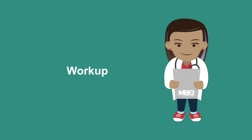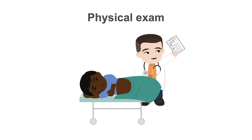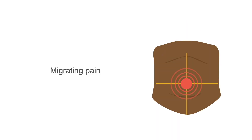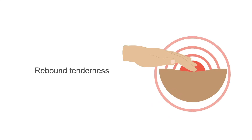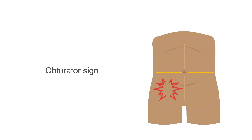Now let's work up acute appendicitis. The physical exam is very important when diagnosing acute appendicitis. In addition to your history, it is the biggest tool that will help you determine if there is appendicitis or not. A common finding is periumbilical pain that migrates to the right lower quadrant. There can be rebound tenderness, tenderness to palpation at McBurney's point, obturator sign, psoas sign, and Rovsing sign.